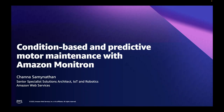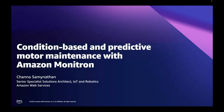Hello everybody, my name is Chana Samanathan and I'm a specialist solutions architect working on IoT and robotics at Amazon Web Services. Today I'll be talking about Amazon Monitron and how it can be used for condition-based and predictive motor maintenance. Amazon Monitron is an end-to-end system that uses machine learning to detect abnormal behavior in industrial machinery, enabling you to implement condition-based and predictive maintenance and reduce unplanned downtime.